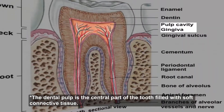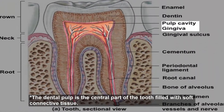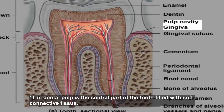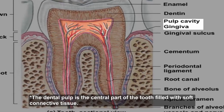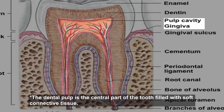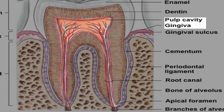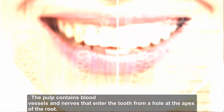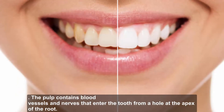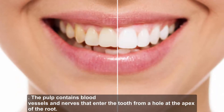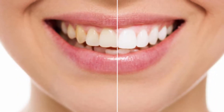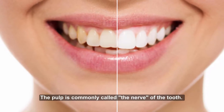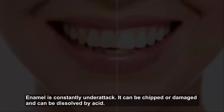The last layer is the dental pulp, which is the central part of the tooth, filled with soft connective tissue. The pulp contains blood vessels and nerves that enter the tooth from a hole at the apex of the root. The pulp is commonly called the nerve of the tooth.